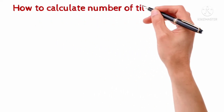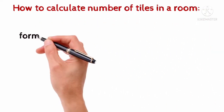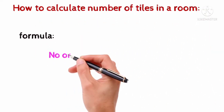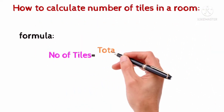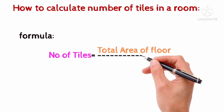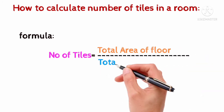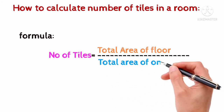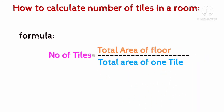How to calculate the number of tiles in a room. Formula: Number of tiles equals total area of floor divided by total area of one tile.